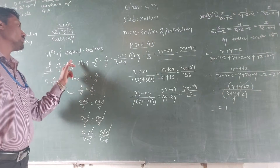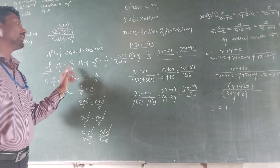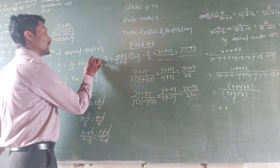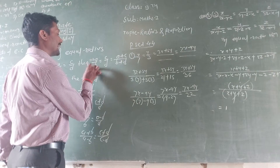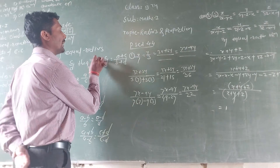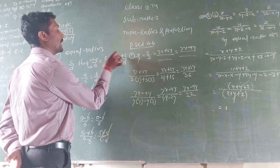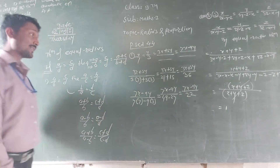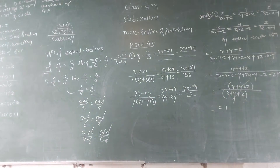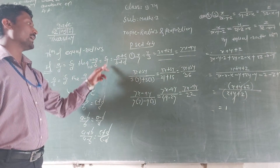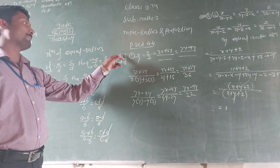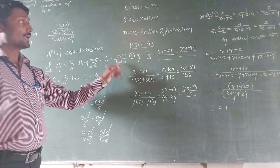If a upon b is equal to c upon d, the condition that applies is that numerator addition upon denominator addition. That means a plus c upon b plus d. That is the theorem of equal ratio.